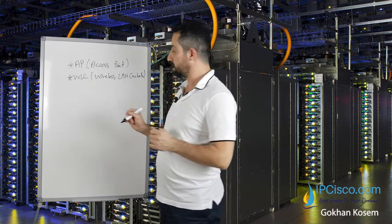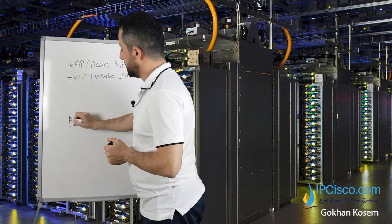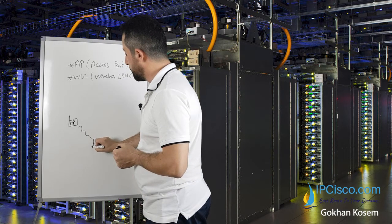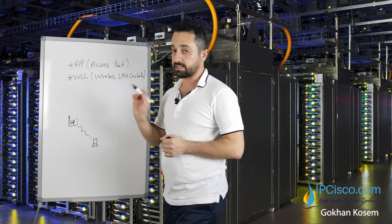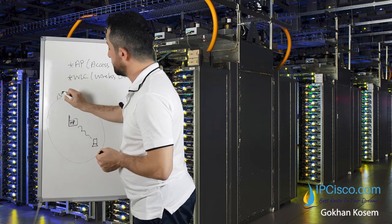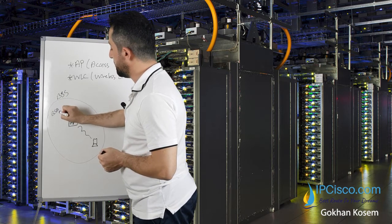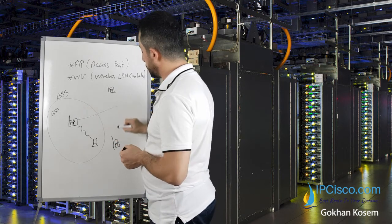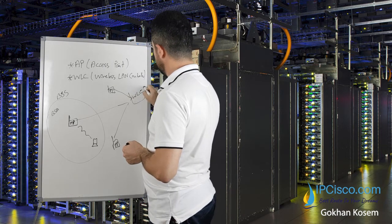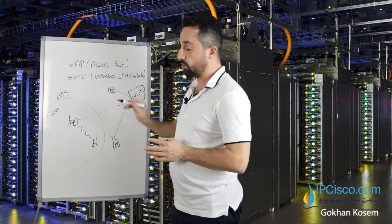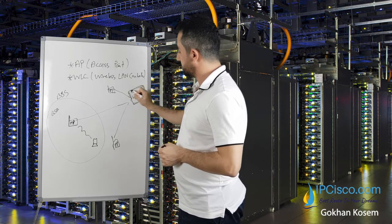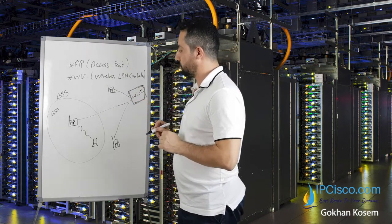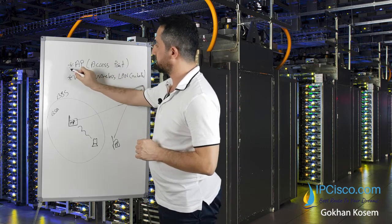So what is an access point and WLC? As we talked about in BSS lessons, there is an access point from which we receive wireless service. We have a computer here receiving the wireless network service from this access point. This is a BSS and the coverage area is a BSA. There are different access points here, and all these access points are managed by WLCs. Some of them are standalone and autonomous access points, but generally access points are managed by WLCs.